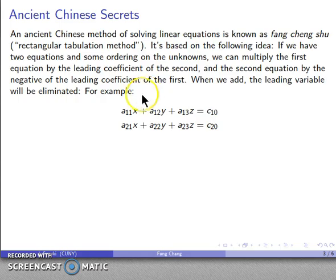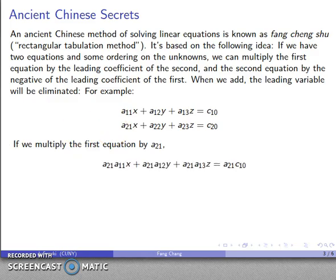So, for example, let's say I have the system of equations, or the 2 equations at least, a11 x and some other stuff, and then a21 x and some other stuff. And if I multiply the 1st equation by a21, that's the coefficient of the 2nd equation, and I multiply the 2nd equation by negative a11, that's the negative of the coefficient of the 1st,